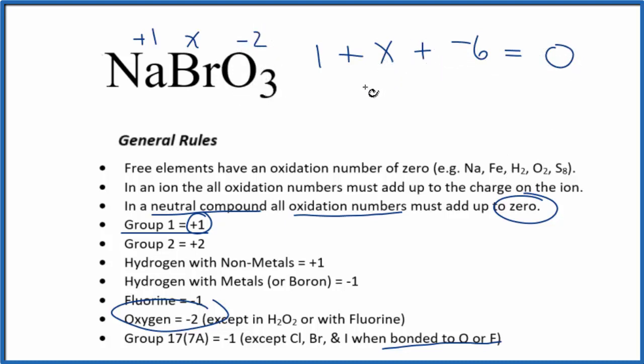Now we just solve for X. X plus, let's see, minus five equals zero. Add five to both sides, so X equals a positive five.